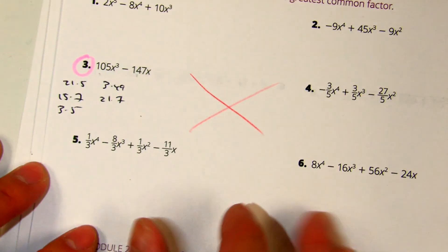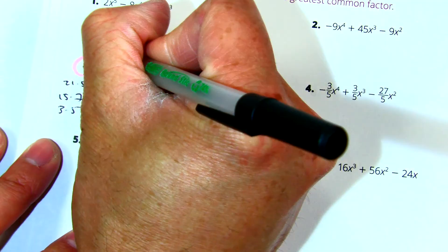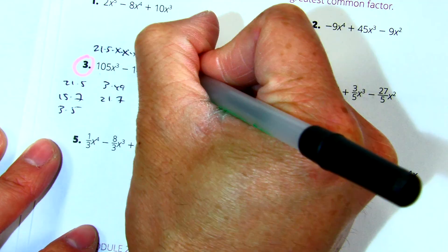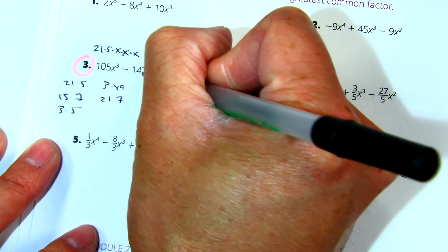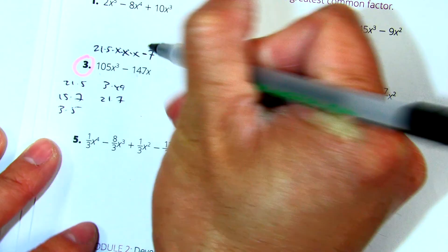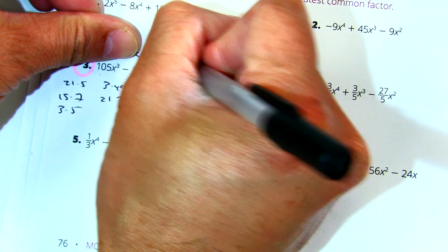That means that 105 is 21 times 5 times x times x times x. And negative 147 is negative, I'm going to choose negative 7. Negative 7 times 21 times x.